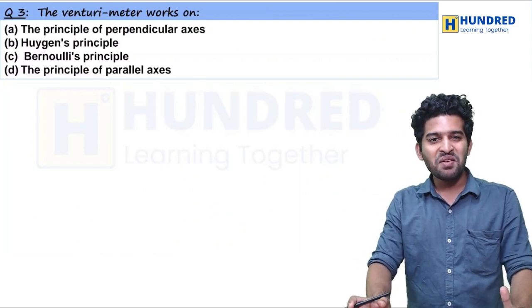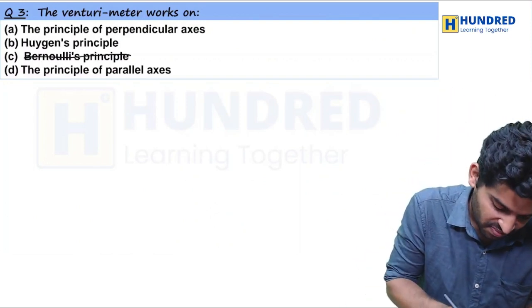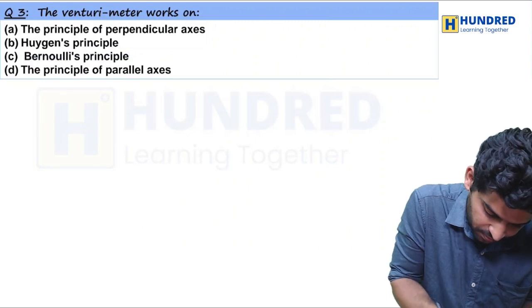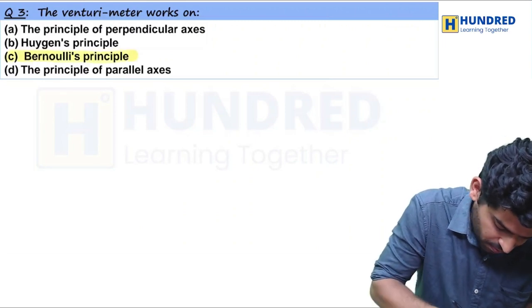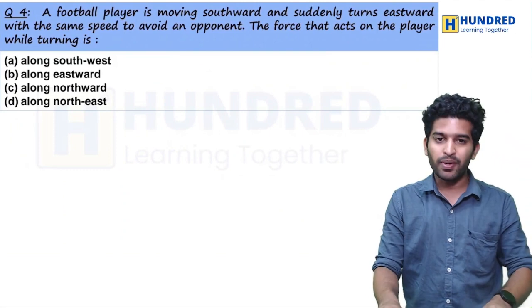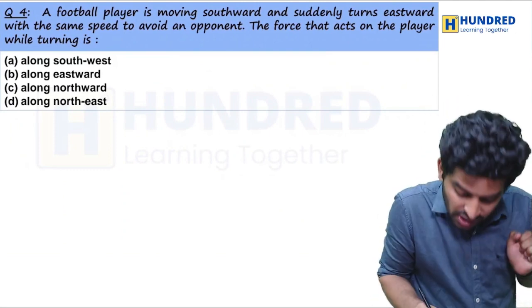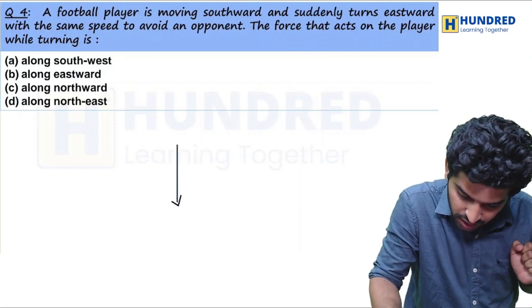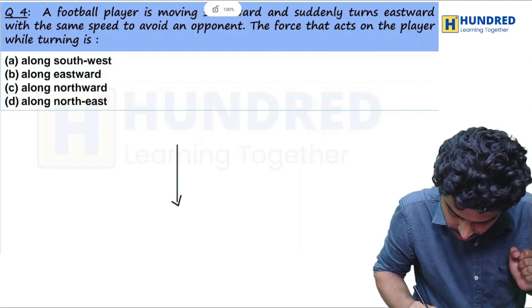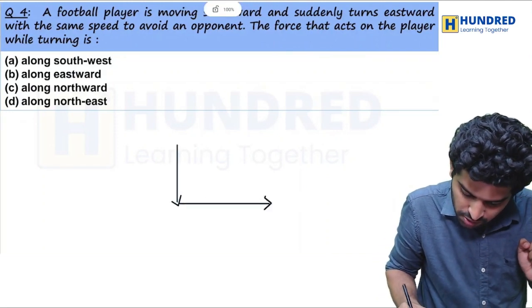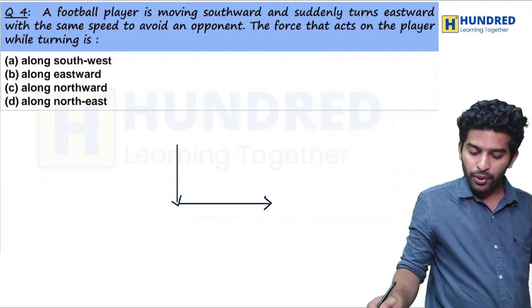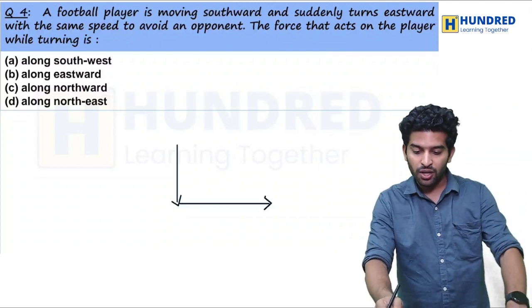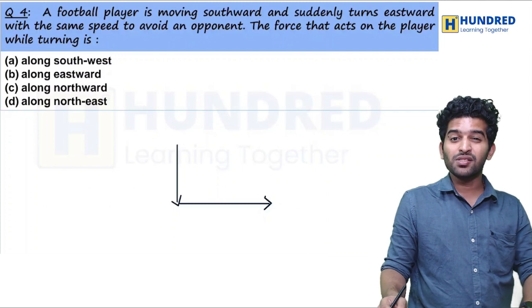Venturimeter works on Bernoulli's principle. A football player is moving southward and he suddenly turns eastward with the same speed to avoid an opponent. Then the force acting on the player while turning is what?